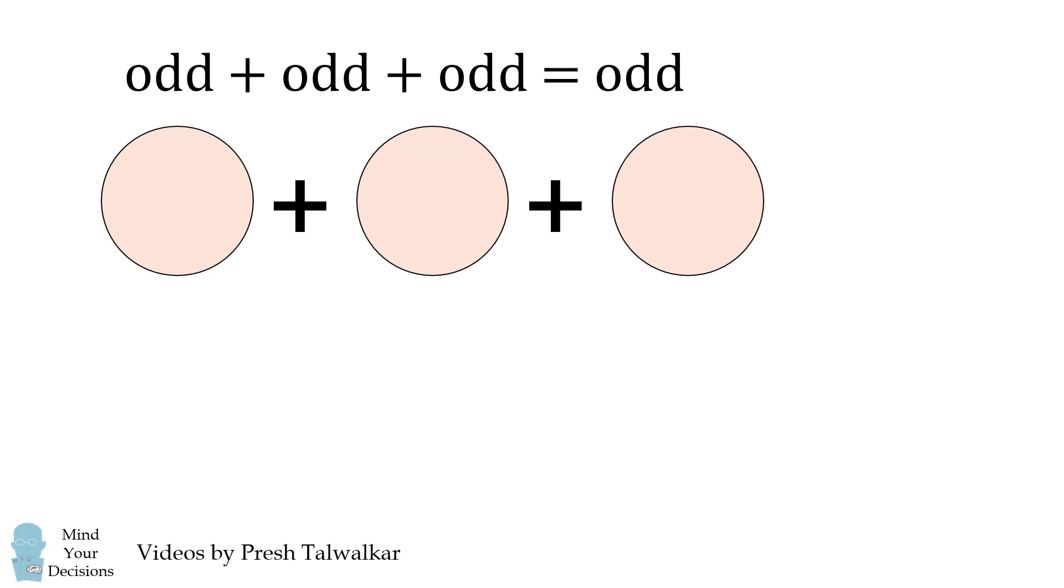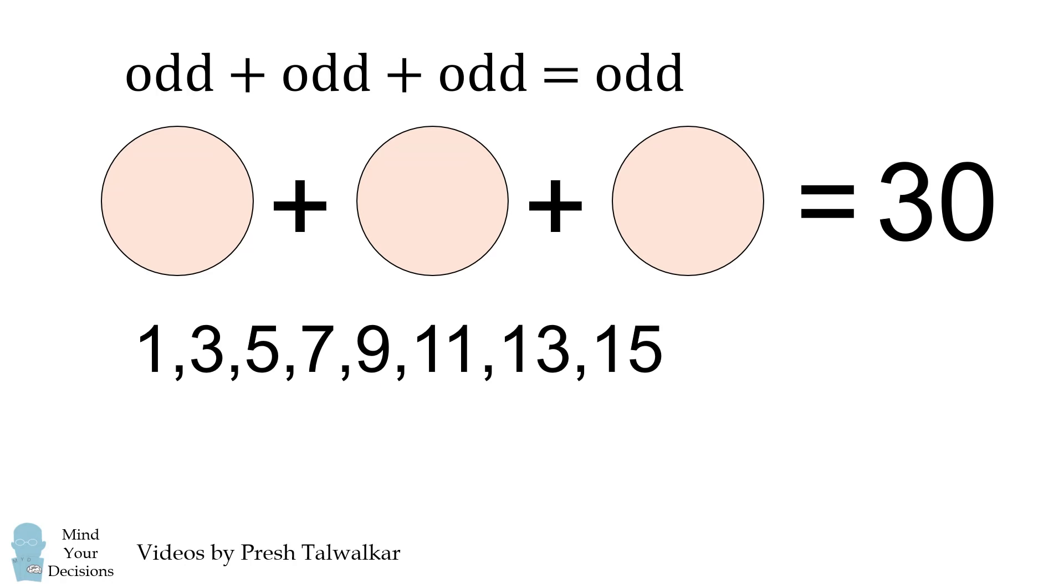So, how can we get 3 numbers to have a sum of 30 if we're limited to the odd numbers from 1 to 15? We can't. It's mathematically impossible.